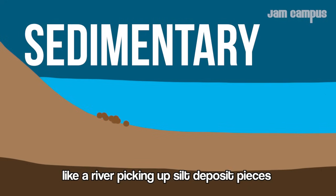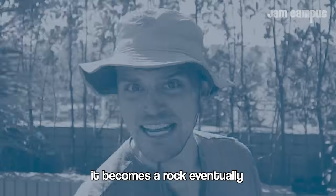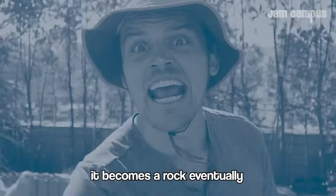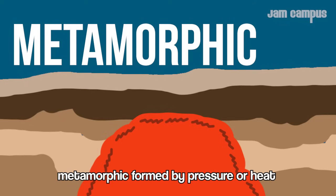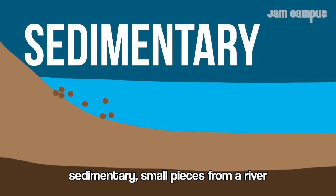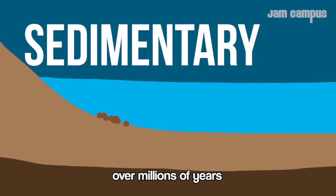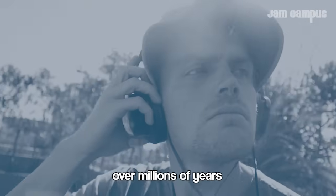like a river picking up and depositing pieces over time. To recap: igneous comes from a volcano, metamorphic is born by massive heat, and sedimentary forms from small pieces deposited by rivers over millions of years.